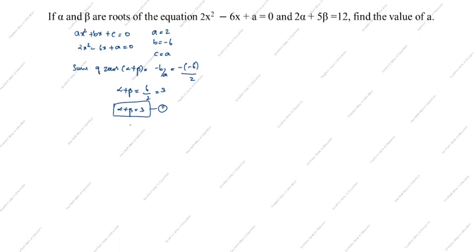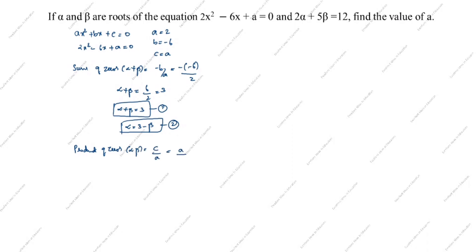From this we take alpha equals 3 minus beta. This is the second equation. What is given in the question? 2 alpha plus 5 beta equals 12. Next we will find the product of zeros. Product of zeros: alpha times beta equals c by a. Here c is a and a is 2, so alpha beta equals a by 2. This is the third equation.